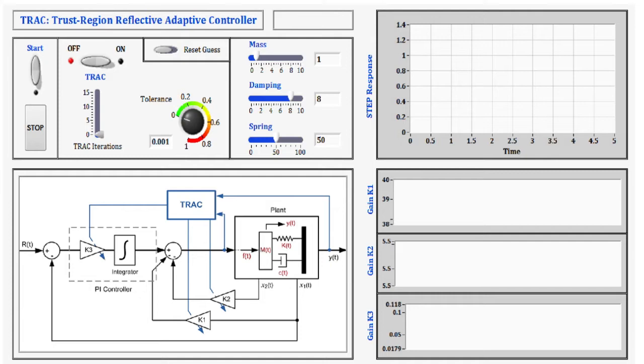The purpose of TRAC is to eliminate the impact of any disturbance acting on a control system resulting from a change in the plant parameters by automatically adjusting the feedback gains.